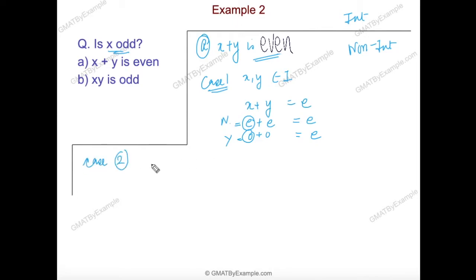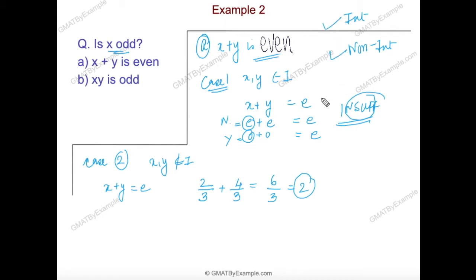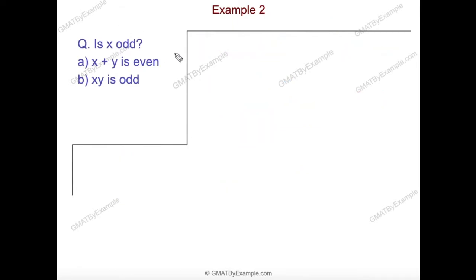For case two, where x and y may not be integers: for example, 2/3 plus 4/3 equals 6/3, which equals 2 — an even number. Here x and y are not integers. So the answer to 'is x odd?' is no, but x plus y can still be even. This confirms statement A is insufficient. The important point is that you must consider both integer and non-integer values — none of the values are out of scope.